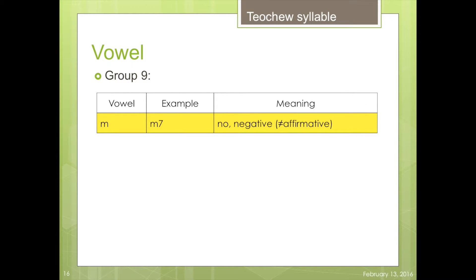Go on to group 9. Example, 'ỏi' is meaning no prefix, negative.